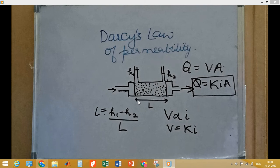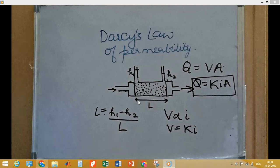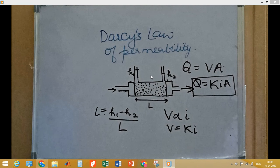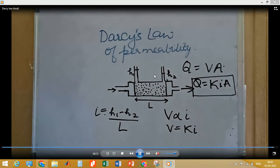We will discuss the range of permeability for different kinds of soils in the next video. Writing velocity as directly proportional to hydraulic gradient and equating it with permeability constant k gives v = ki. From the continuity equation, discharge Q = v × A, so discharge through the porous media is Q = kiA, replacing velocity with k times i. This is the most common form of Darcy's law equation.